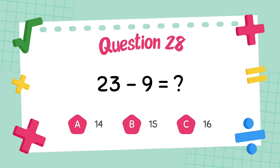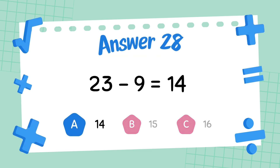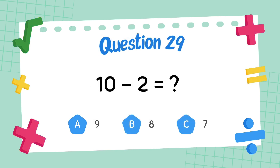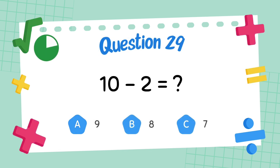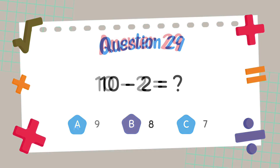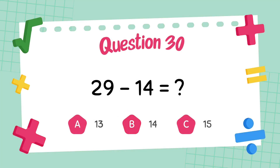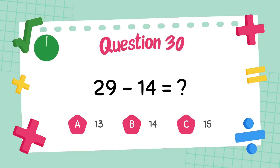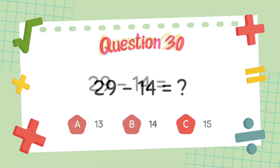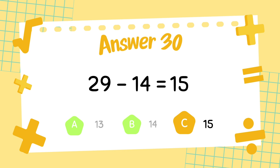What is 23 minus 9? The answer is 9. What is 10 minus 2? The answer is 8. What is 29 minus 14? The answer is 8.